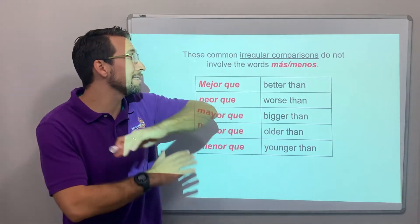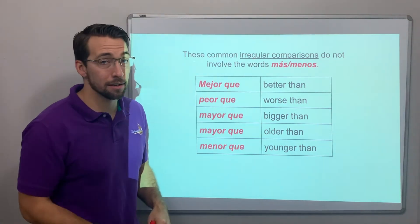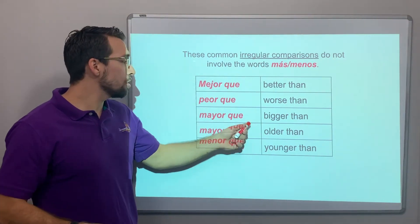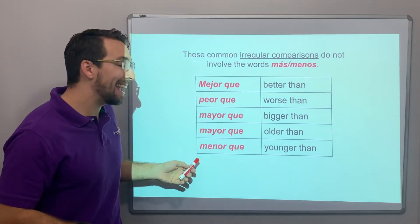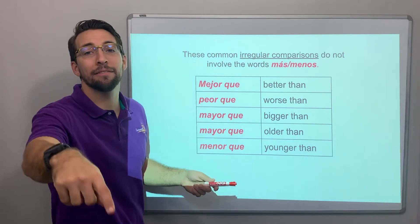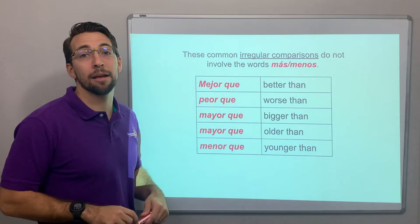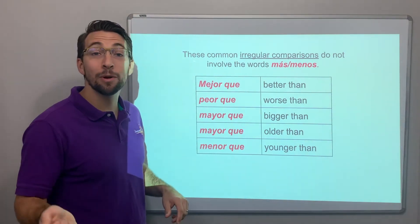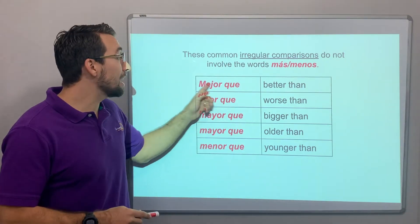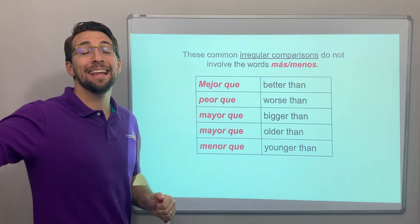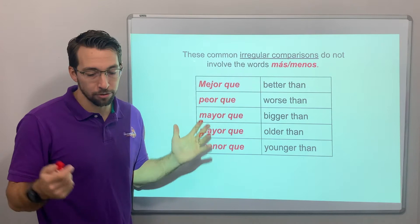So these common irregular comparisons do not involve más or menos. Check it out: mejor que — better than; peor que — worse than; mayor que — older than; menor que — younger than. Él es menor que Javier — he's younger than Javier. Yo soy mayor que mi hermano — I'm older than my brother. Mi esposa es mayor que yo — my wife is older than I am. Mejor: yo soy mejor que él en la cancha — I'm better than him in the field or court.